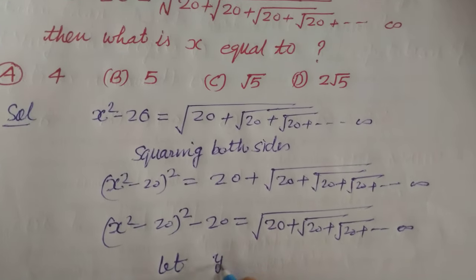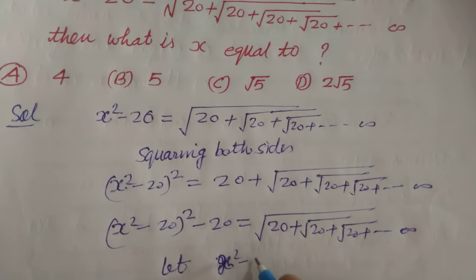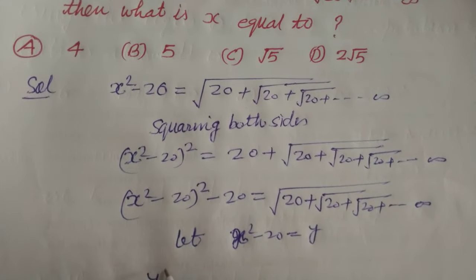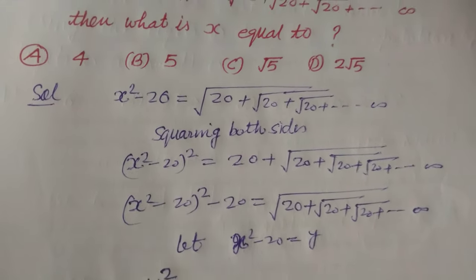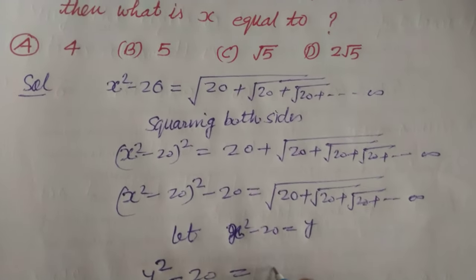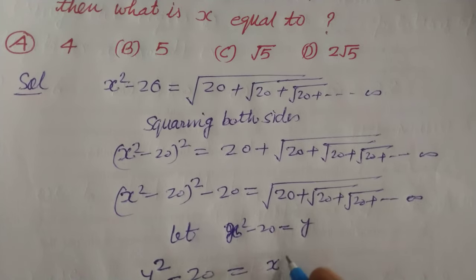Now, let X square minus 20 equal to Y so it is Y square minus 20 and what is this? This is also X square minus 20.